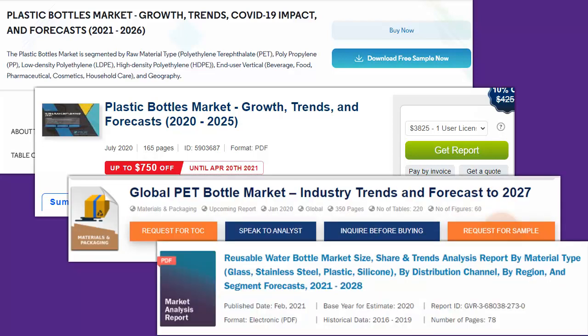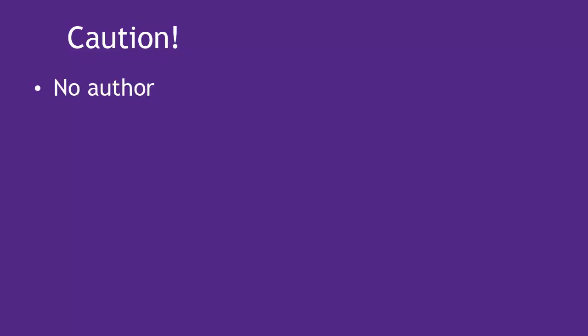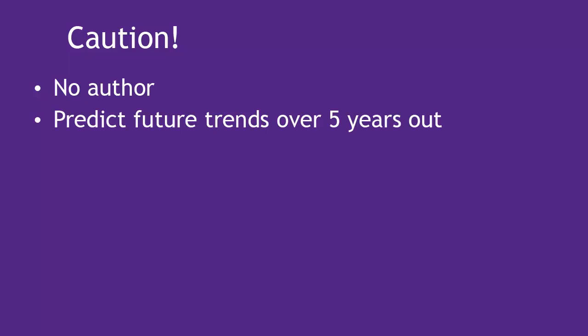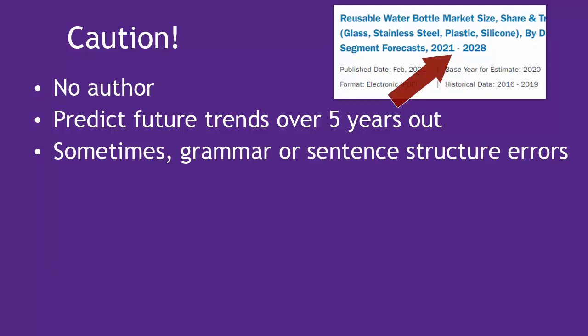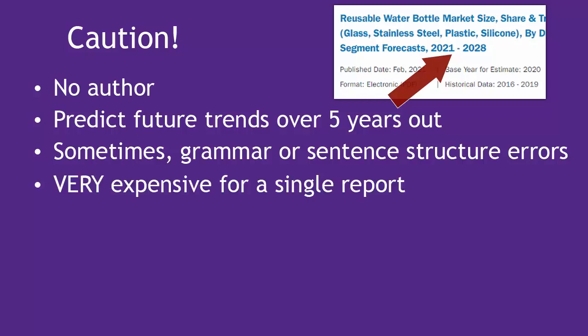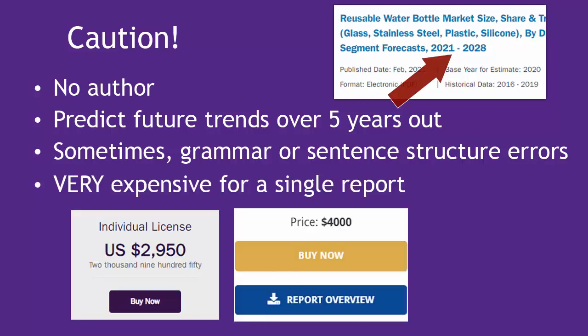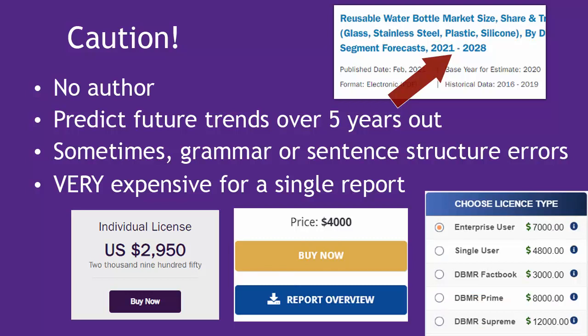However, in my experience, most of these reports you find via Google are not high quality at all. Here are some warning signs of poor quality market research reports: there is no author's name; they predict trends more than five years away — it's almost impossible to be accurate that far out; sometimes grammar or sentence structure errors indicate that the reports are generated very quickly with poor editorial oversight. Worst of all, you'd have to pay a very high price to get one single report. Don't pay for these reports.